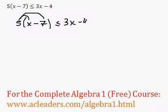Just copy everything else first. 5 times x, 5x. 5 times negative 7, negative 35. Small or equal to 3x minus 4.